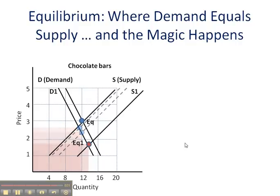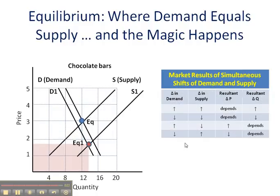Here's a quick graph — almost like a cheat sheet — of the results of simultaneous shifts in supply and demand. You'll probably want to commit this one to memory. Folks, hope that made sense. I shall see you soon.